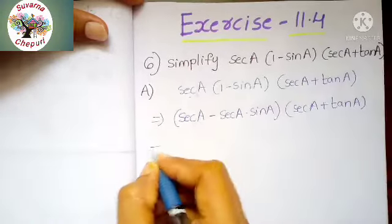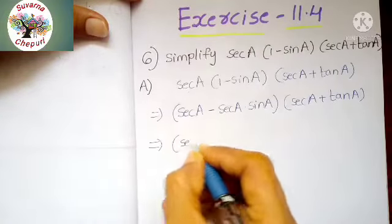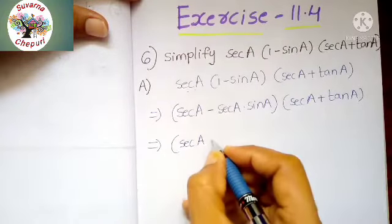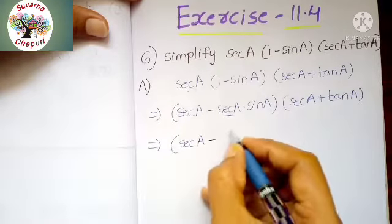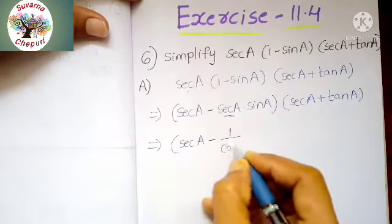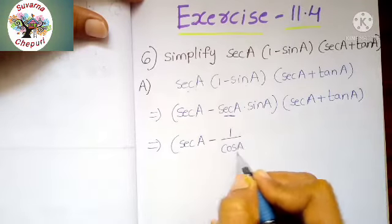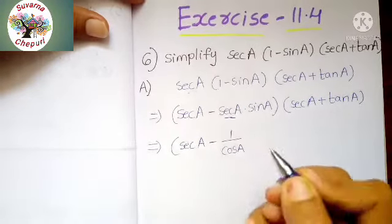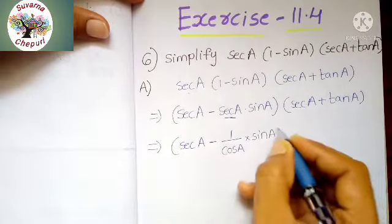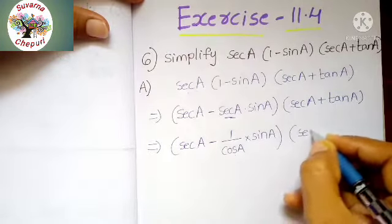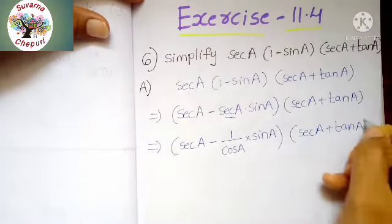What is the second step? Secant A, same as it is, minus. Here secant A means 1 by cos A. So there is no change into sin A. Next, write down the same as it is: secant A plus tan A.